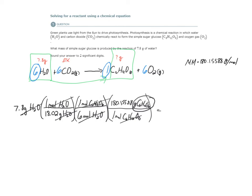I just need to do the math. So, 7.8 times 1 over 18.02, close parentheses, open parentheses, 1 over 6, close, open parentheses, 180.15588 over 1, close parentheses. I put it into my calculator exactly how I see it here. To simplify, I get 12.9968 grams of glucose. They want us to round to two significant digits. So this would be 13 grams of C6H12O6.